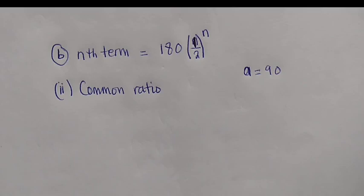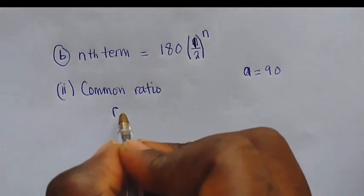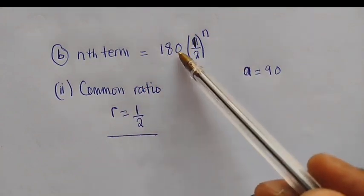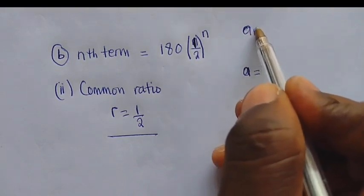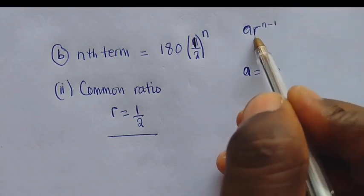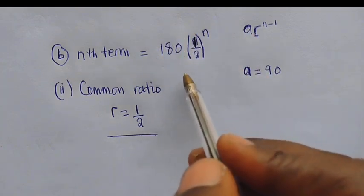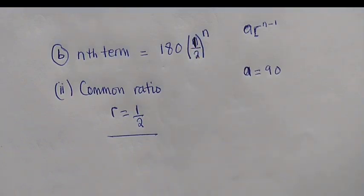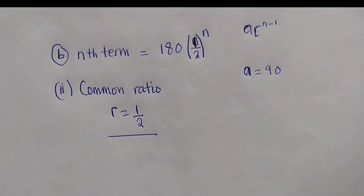Alright, so we've now come to question B part 2: finding the common ratio. Remember what I said — to find the common ratio, there's no need to calculate. Just say the common ratio, represented by R, is equal to 1/2. This is our common ratio. Why? Because we are given the nth term in the simplified form, and this common ratio is the base raised to the power n in the formula a·r^(n−1). So R = 1/2. If you want, you can also calculate it using the first term, which is 90.